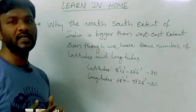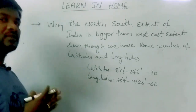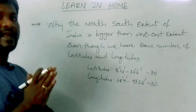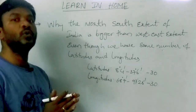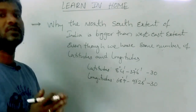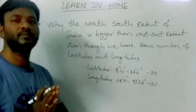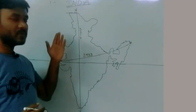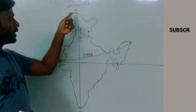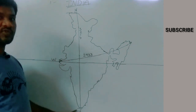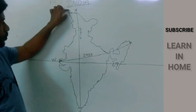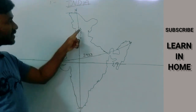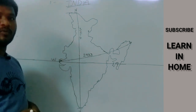Even so, the north-south extent of India is bigger than the west-east extent. If you observe the India map, the distance from the extreme north point to the extreme south point of India is 3,214 kilometers.